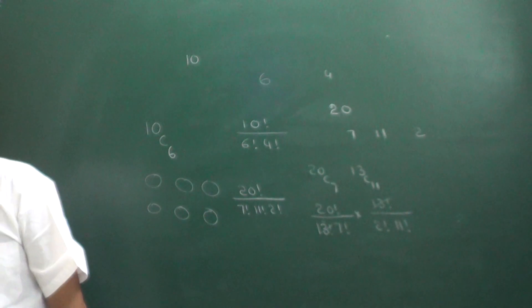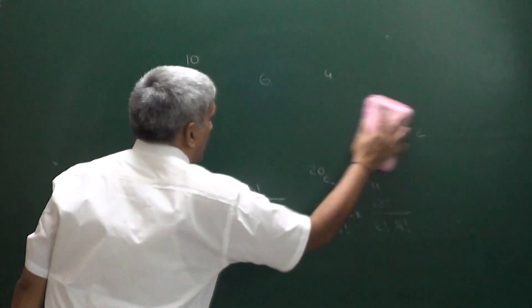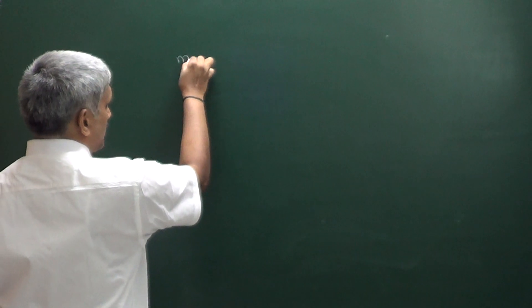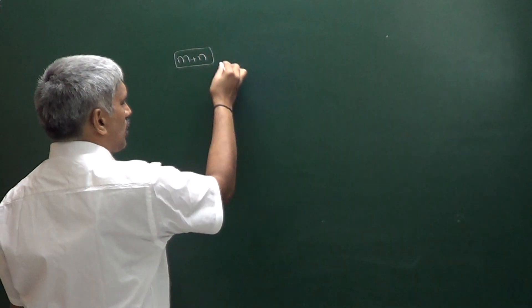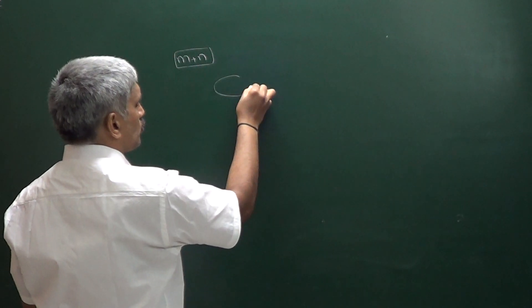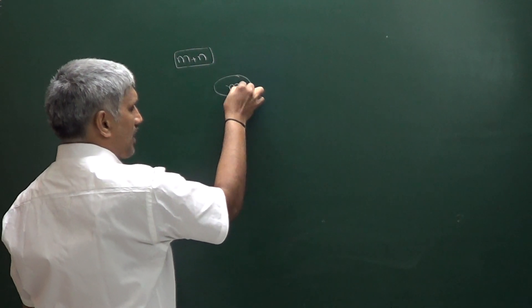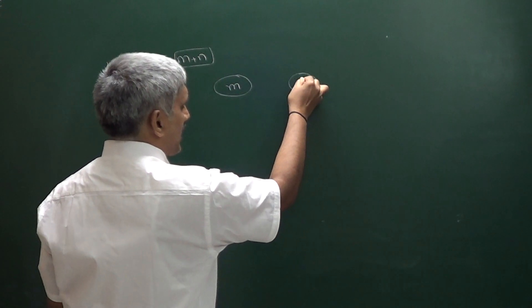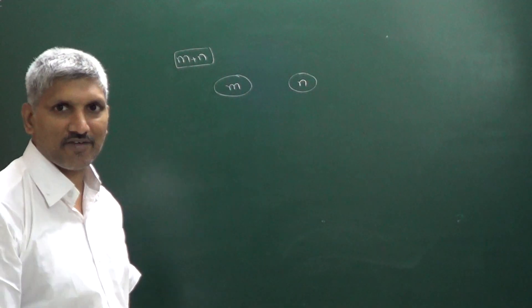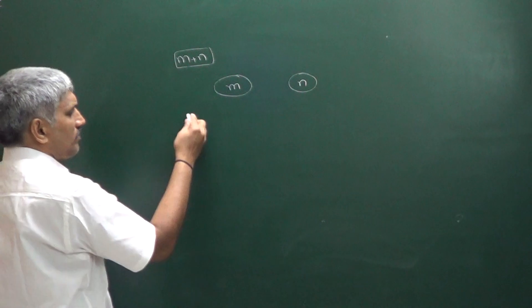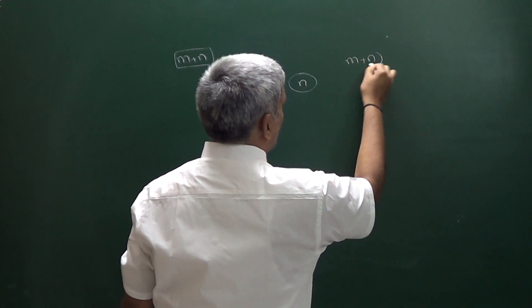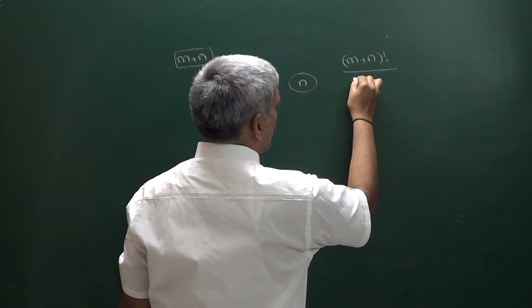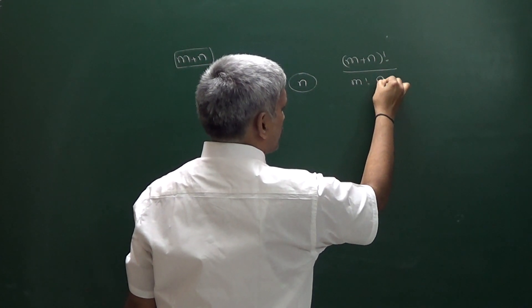Now the general question: suppose we have M plus N items. These M plus N items we have to divide into 2 groups — one group containing M items, the other group containing N items. How many ways can we divide? Directly we can write M plus N factorial divided by M factorial into N factorial.